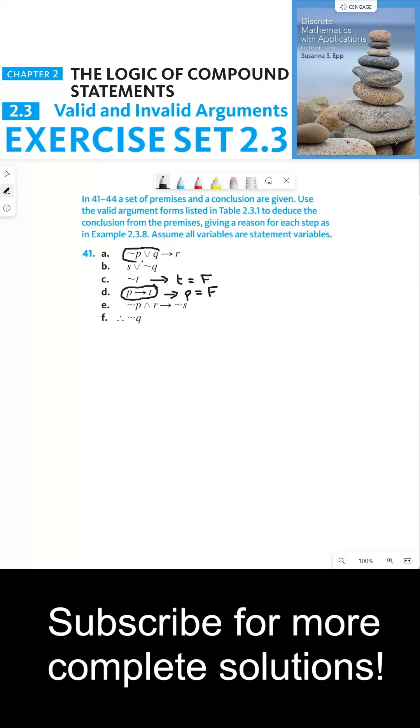Now since p is false, that means not p or q is true, since not p is true and true or any statement is true. And because the hypothesis of this true implication is true, that means the conclusion must therefore also be true. So this means r is true.